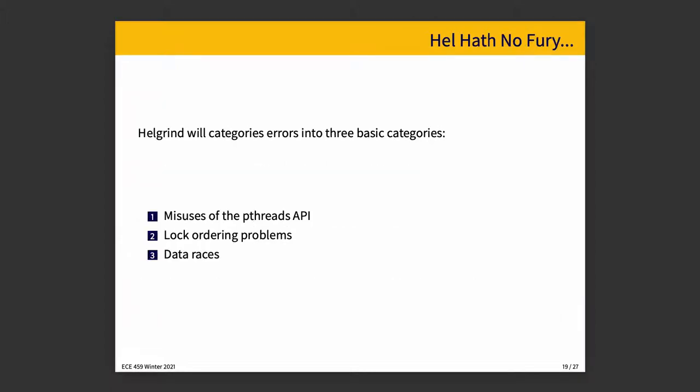And Helgrind, again, also being developed for a C and C++ kind of world, really addresses three kinds of errors. Number one is misuses of the pthreads API. Number two is lock ordering problems. Number three is data races.